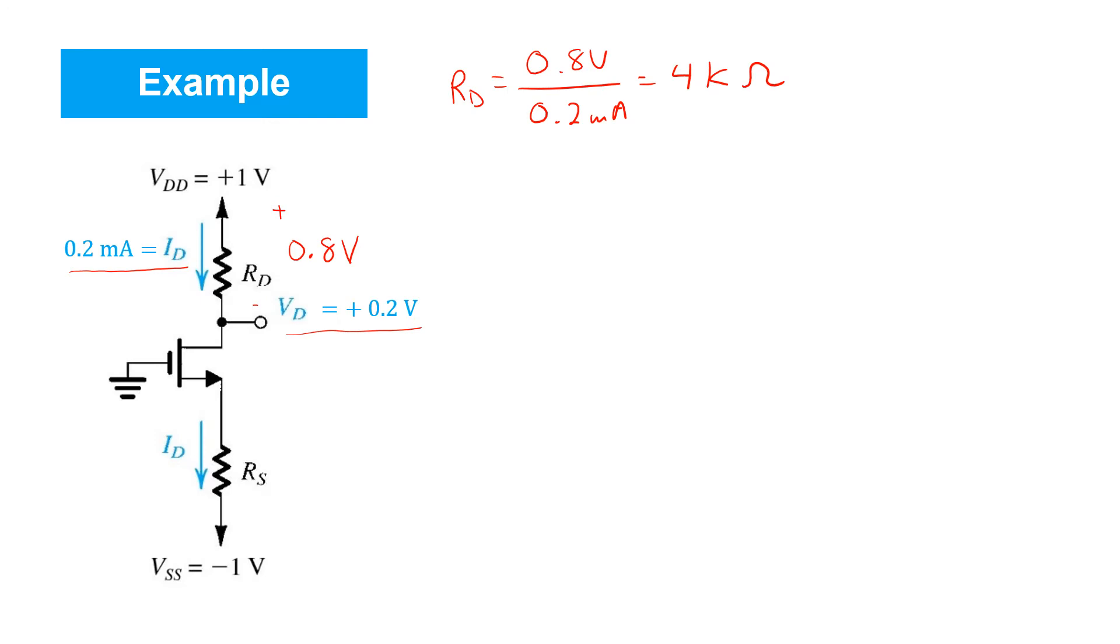Now, the more difficult part of the problem is to find the value of RS. The reason is because it involves the nonlinear IV characteristic of the MOSFET. The first thing to point out is that for this enhancement mode MOSFET, since the drain voltage is actually above the gate voltage, we're guaranteed that as long as this transistor is on, it's definitely in saturation.